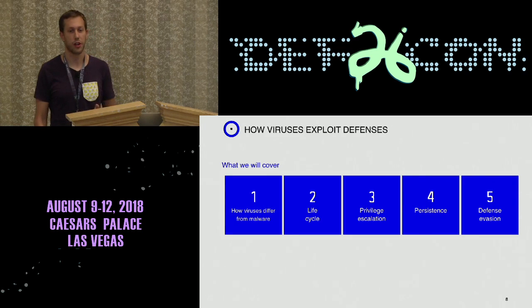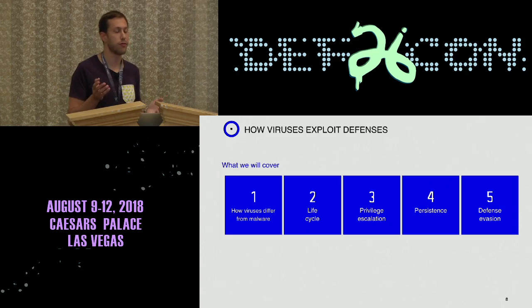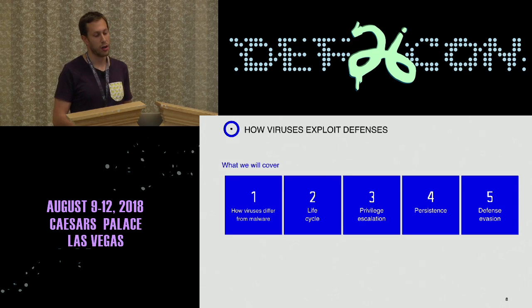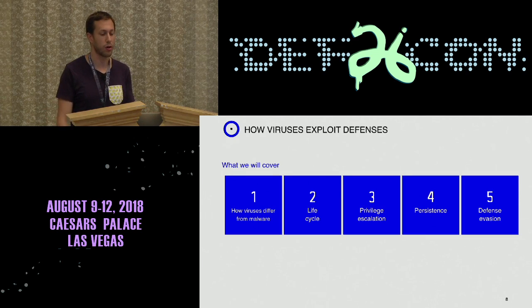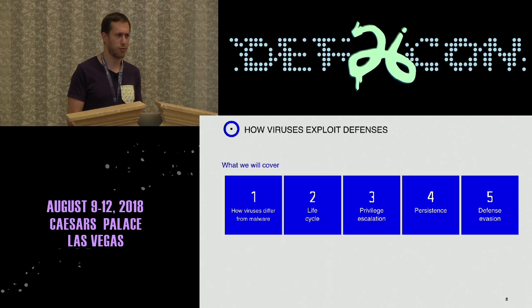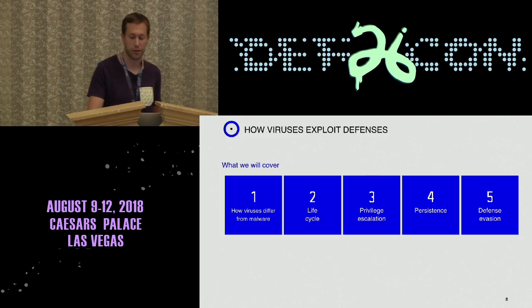Now I want to move on to the second part of the talk. I'll give a brief overview of what we're going to cover. I'll start with some key differences between viruses and malware, which I think are important for the next points. Then I'll cover briefly the life cycle of viruses, and then methods of privilege escalation, persistence, and defense evasion in viruses.